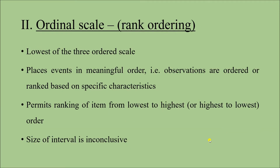The next one is the ordinal scale, where there is a particular order or rank. Of all four scales, other than nominal scale, the other three — ordinal, interval, and ratio scales — are ordered scales. Of these three ordered scales, ordinal scale is the weakest. In ordinal scale, we place events in meaningful order — observations are ordered or ranked based on certain specific characteristics, from lowest to highest or highest to lowest. However, the size of the interval is inconclusive, meaning the difference between individual responses does not carry meaningful information.